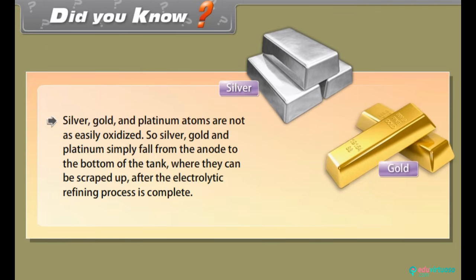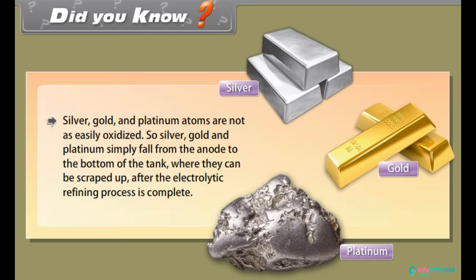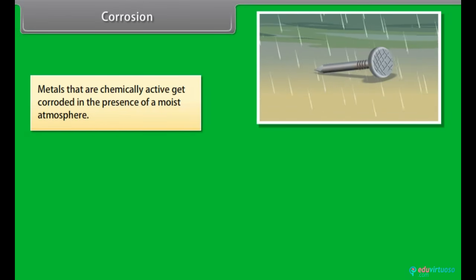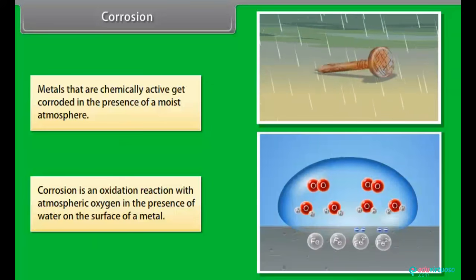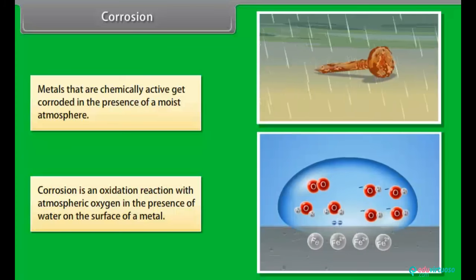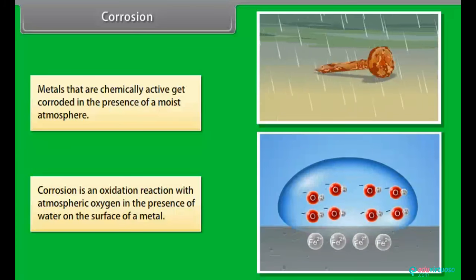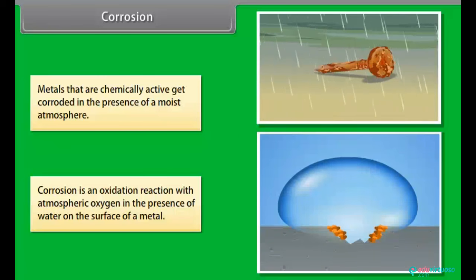Did you know? Silver, gold, and platinum atoms are not easily oxidized, so they simply fall from the anode to the bottom of the tank, where they can be scraped up after the electrolytic refining process is complete. Regarding corrosion: metals that are chemically active get corroded in the presence of a moist atmosphere. Corrosion is an oxidation reaction with atmospheric oxygen in the presence of water on the surface of a metal. For example, iron and aluminium corrode.